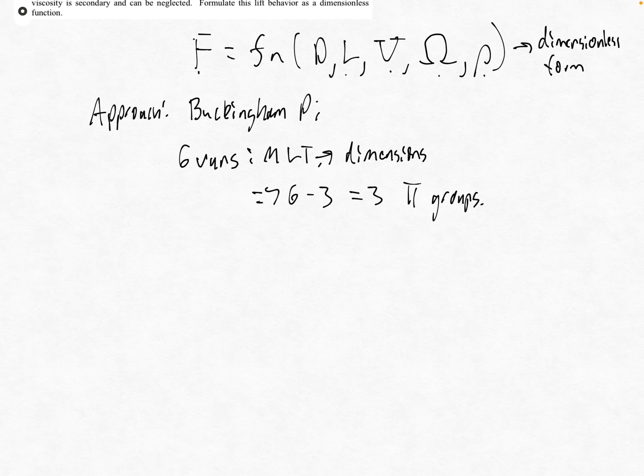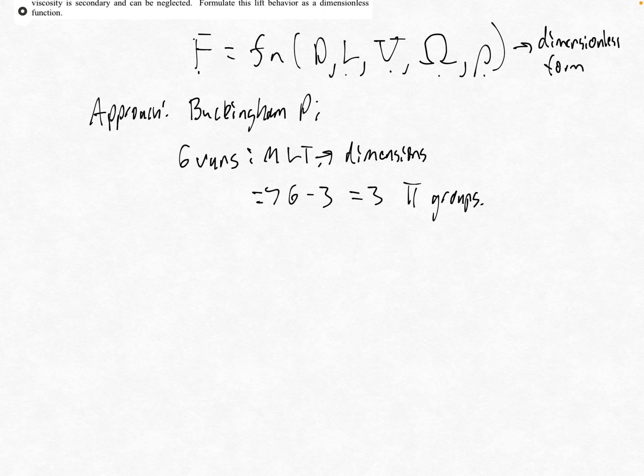To get started, pi one is going to be force F. Now we have to choose our repeating or primary variables. We'll use rho to the a, u to the b, and d (the cylinder diameter) raised to power c. Just to check: rho takes care of mass, u takes care of time, and d takes care of length, so we have all three fundamental dimensions represented among the three primary variables.